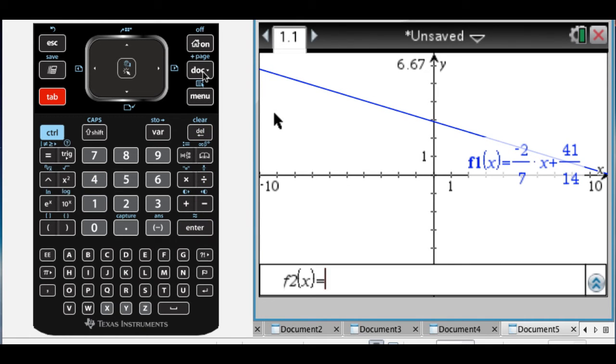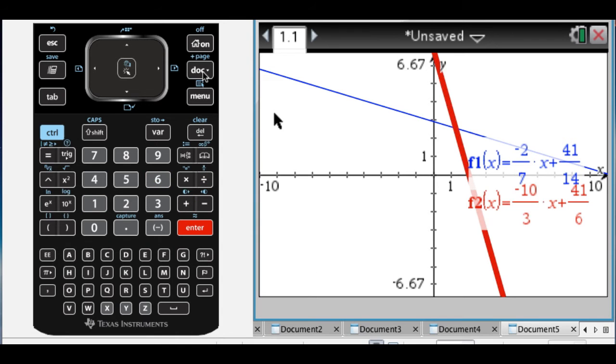And then press tab and enter our second equation. So negative 10 over 3 x, and plus 41 over 6, like that.